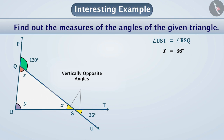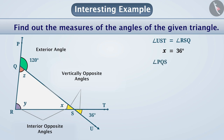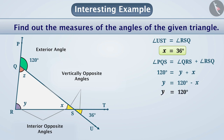Similarly, in the given figure, angle PQS is the exterior angle of triangle QRS. Angle QRS and angle RSQ are the interior opposite angles of angle PQS. The exterior angle of a triangle is equal to the sum of the interior opposite angles. Therefore, angle PQS equals angle QRS plus angle RSQ, which means 120 degrees equals y plus x. So y equals 120 degrees minus x. Since x equals 36 degrees, y equals 120 degrees minus 36 degrees, which equals 84 degrees.